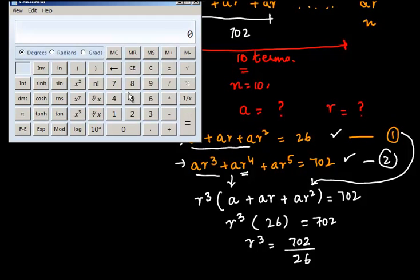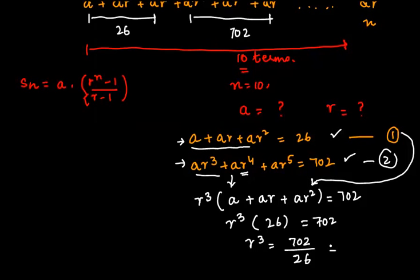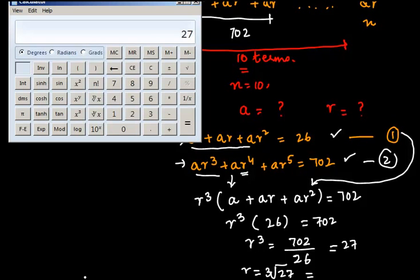Or in other words, r³ = 702 ÷ 26. 702 divided by 26 is equal to 27. Or in other words, r = ³√27, which in any case we know is 3.